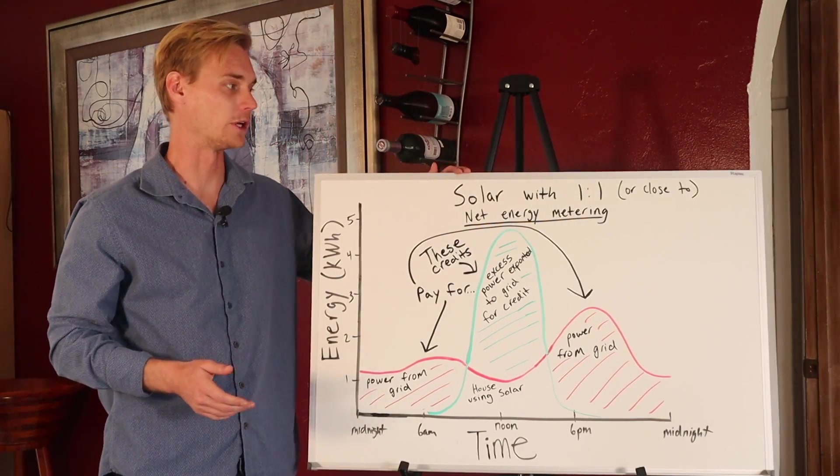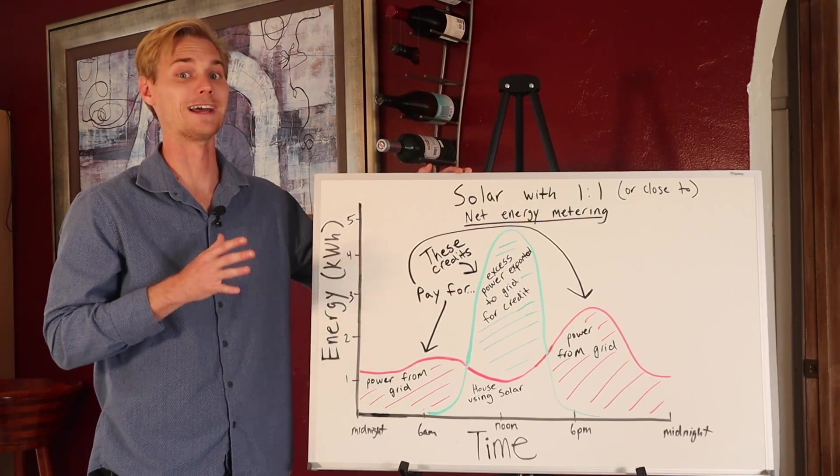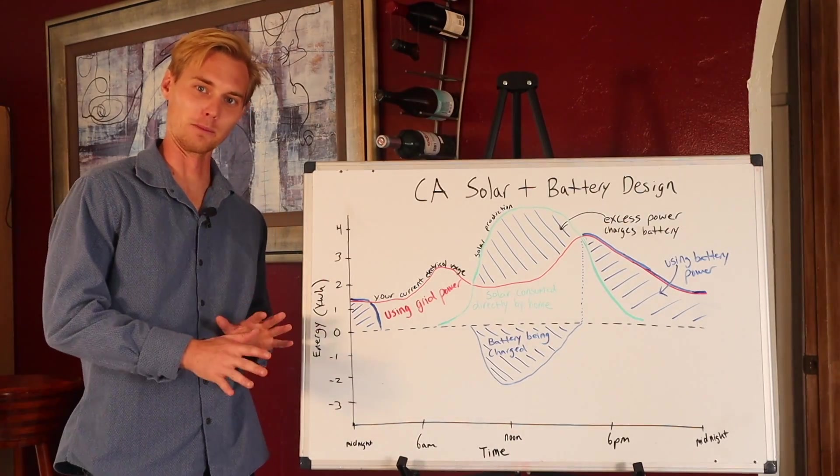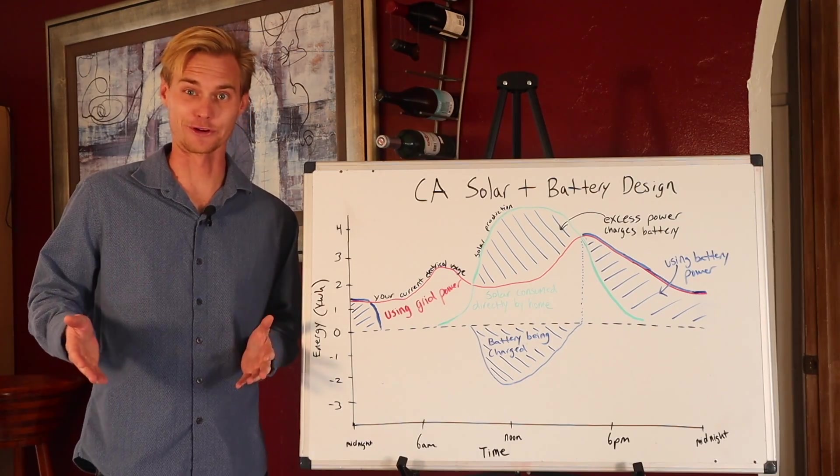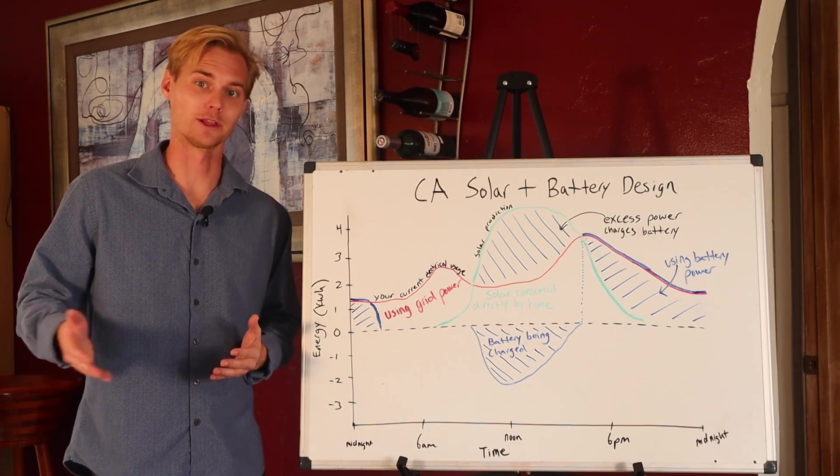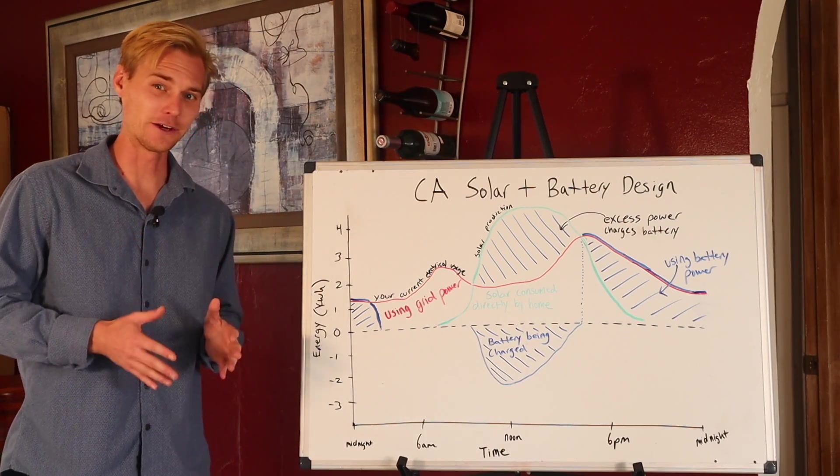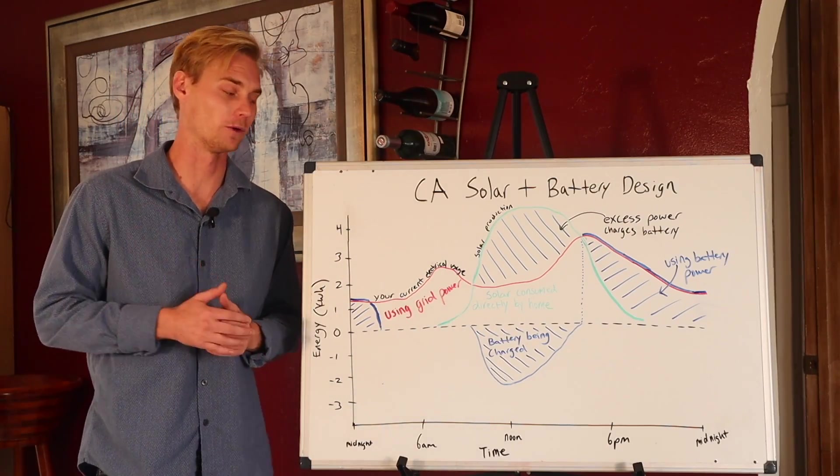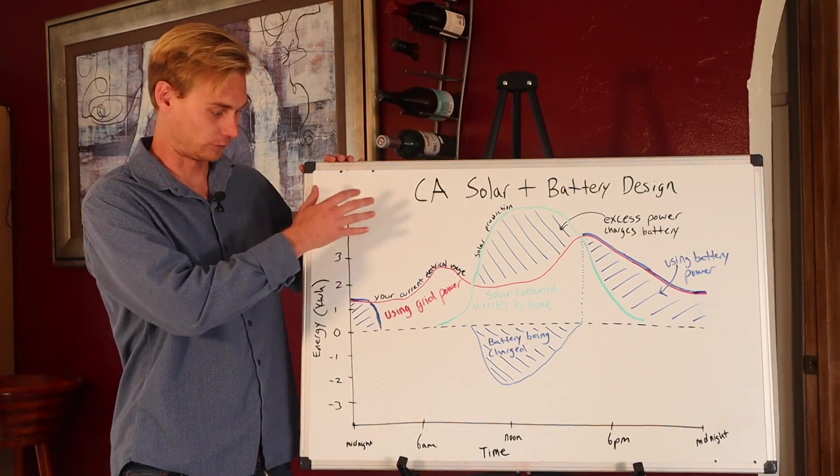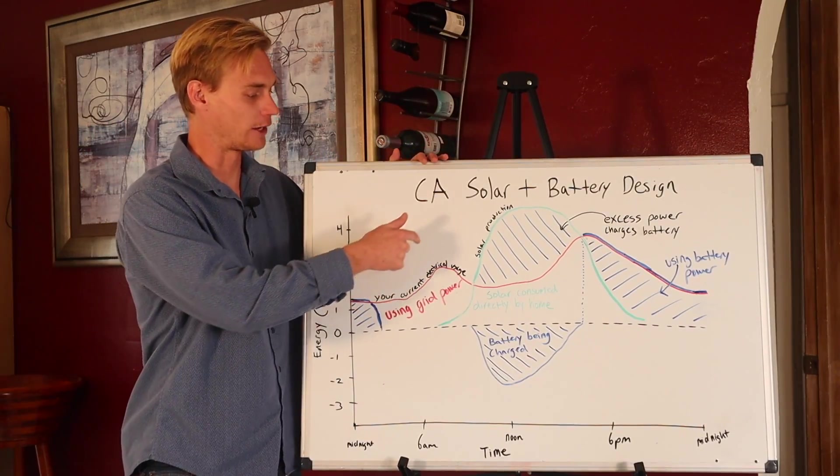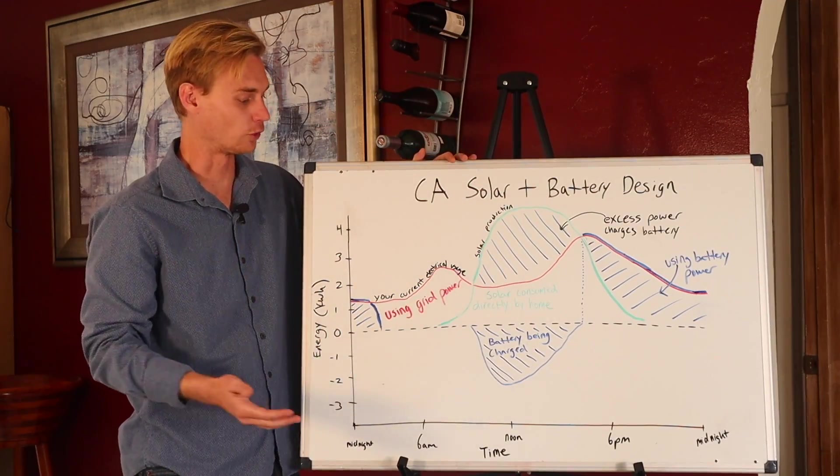So in the scenario where the utility company is not offering one-to-one net metering, the system is actually going to look a little bit more like this. Okay, so bear with me here. I know this is a little bit more of a complex chart, but I'm going to explain it to you. So if the utility company is not going to really give you what the power is worth, like let's say they just want to give you cents on the dollar, like in California, for example, instead of giving all the power back to the grid like in the first example, now we're going to want to have a battery to capture that excess storage. So just like in the other graph, the red line is the home's usage, and then the green is the energy production, but what's new is the blue.